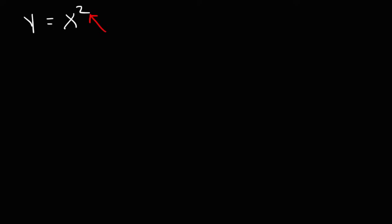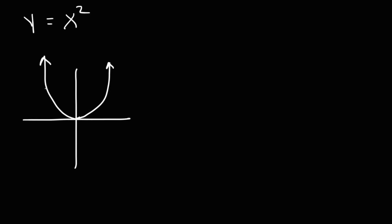Now what about y equals x squared? If the leading term has an even power, the range won't be negative infinity to infinity — it's going to be limited. This is a parabola that opens upward. The lowest y value is 0 and the highest is infinity, so the range is from 0 to infinity. We use a bracket to include 0, but always use a parenthesis when dealing with infinity.